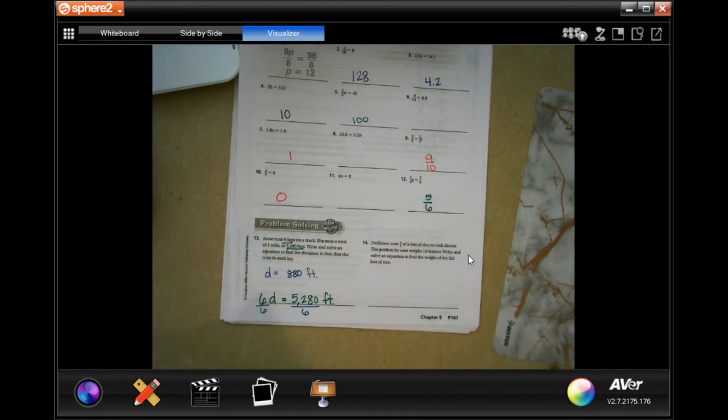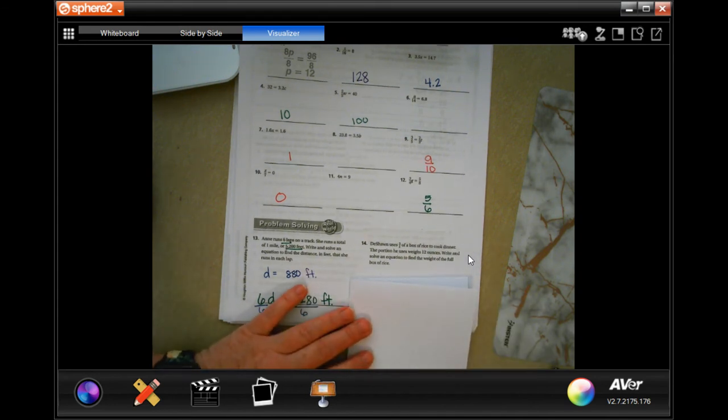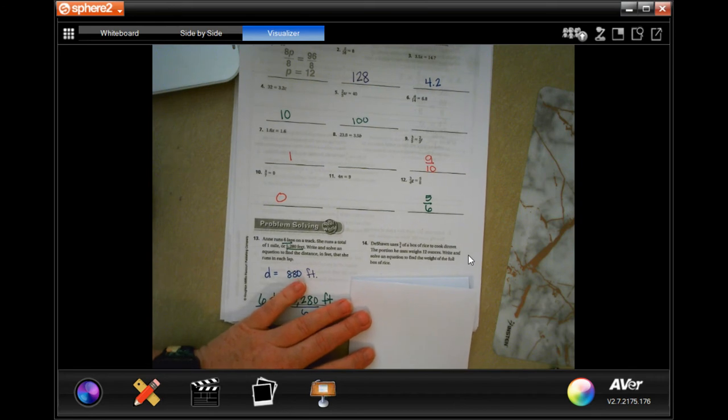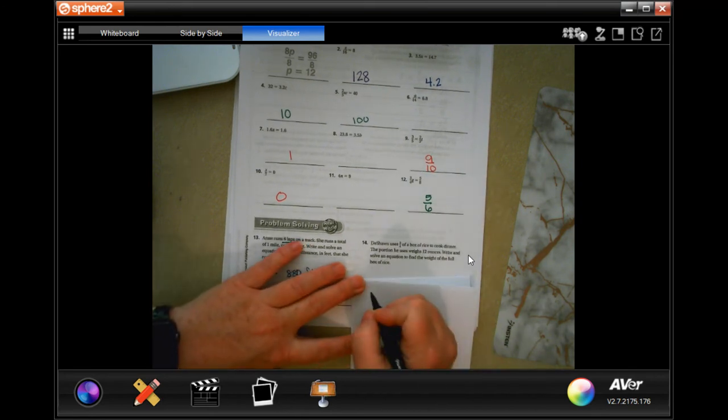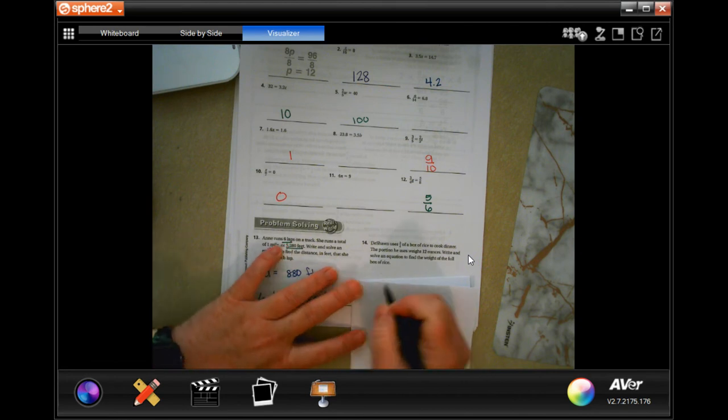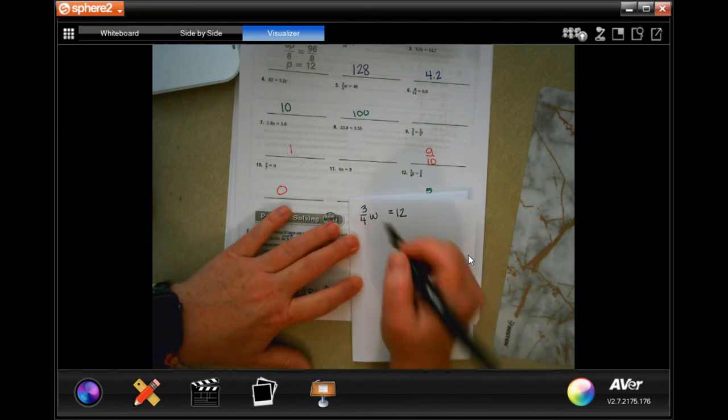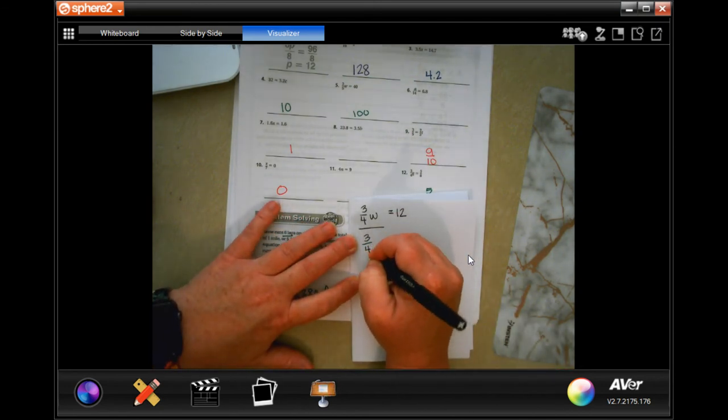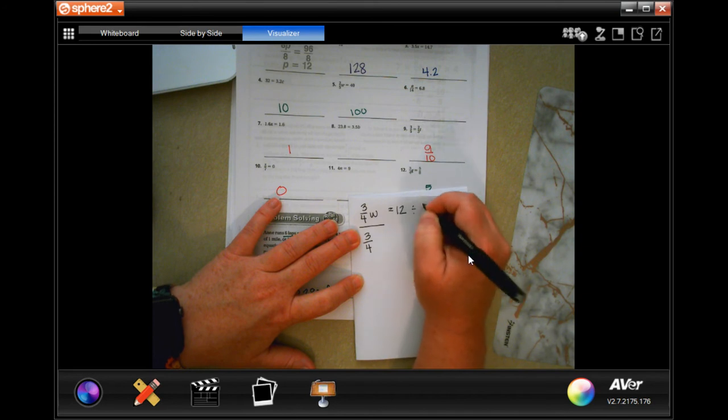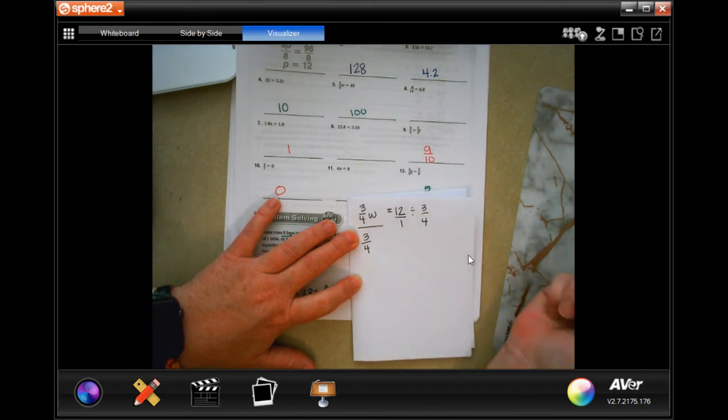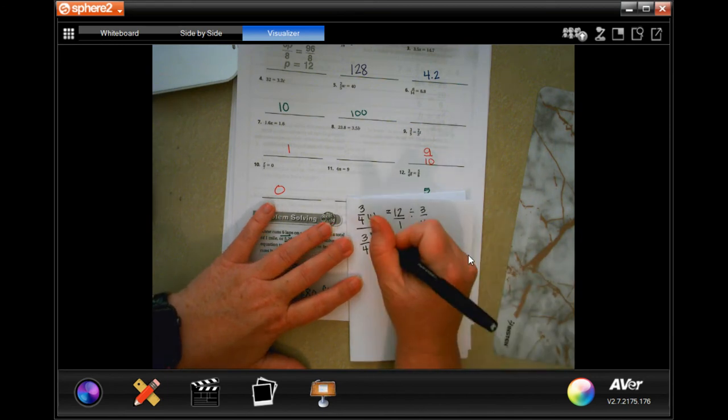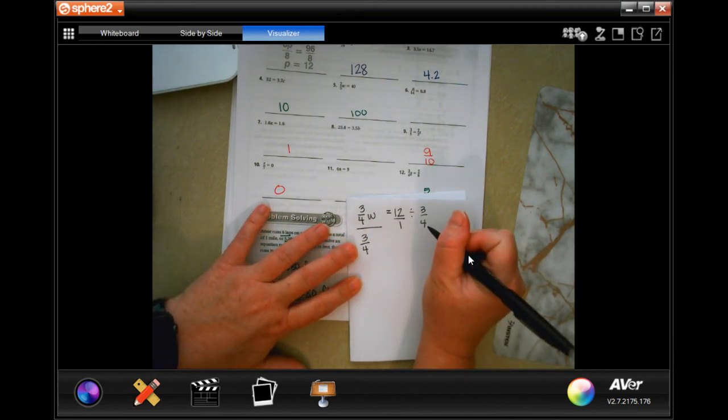Deshaun uses 3 quarters of a box of rice to cook dinner. The portion he uses weighs 12 ounces. Write and solve an equation to find the weight of the full box of rice. So, we have 3 quarters of the weight is 12 ounces. That's not bad. So, now, I'm going to divide by 3 quarters and divide by 3 quarters. I'm going to put that 12 over 1. I know that I was doing it this way before. I'm giving you another option.